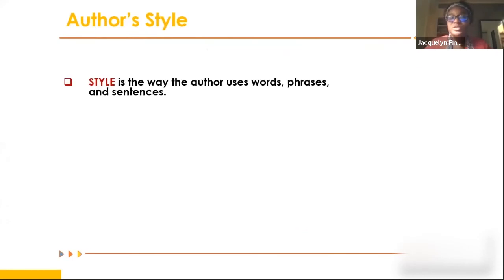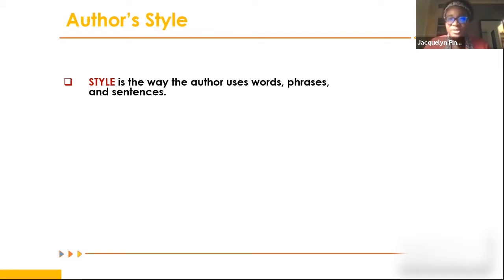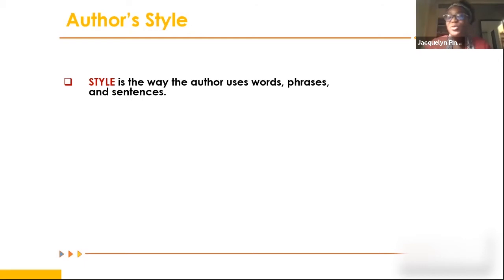Style is the way the author uses words, phrases, and sentences. It's fun to play around with different words. For example, it's one thing to say 'the character was upset' versus 'the character was fuming with fury' - those convey two different things and paint a different picture.